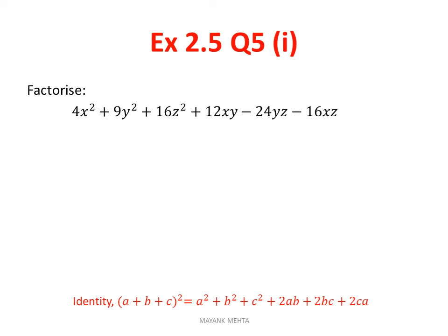That means here we will apply that identity only. a² + b² + c² + 2ab + 2bc + 2ca is equal to (a+b+c)². But here in factorization you have to keep in mind especially where the minus signs are.